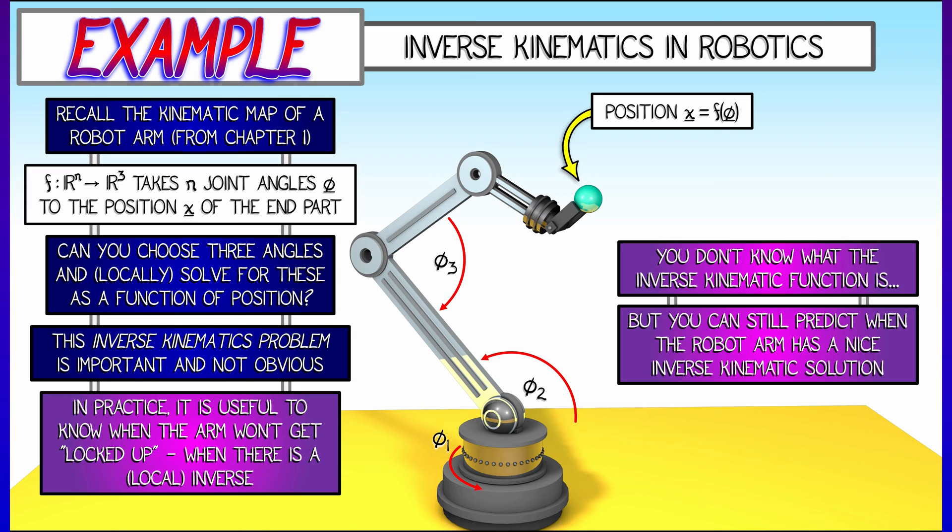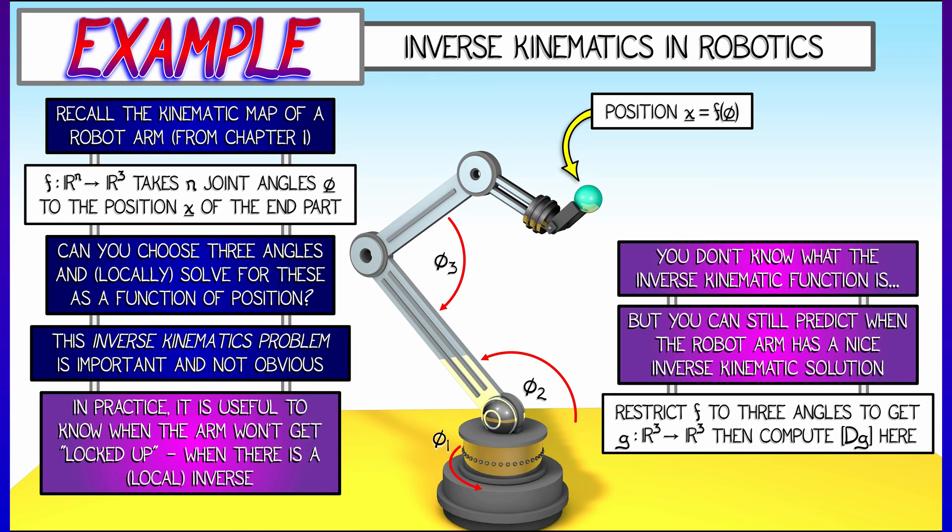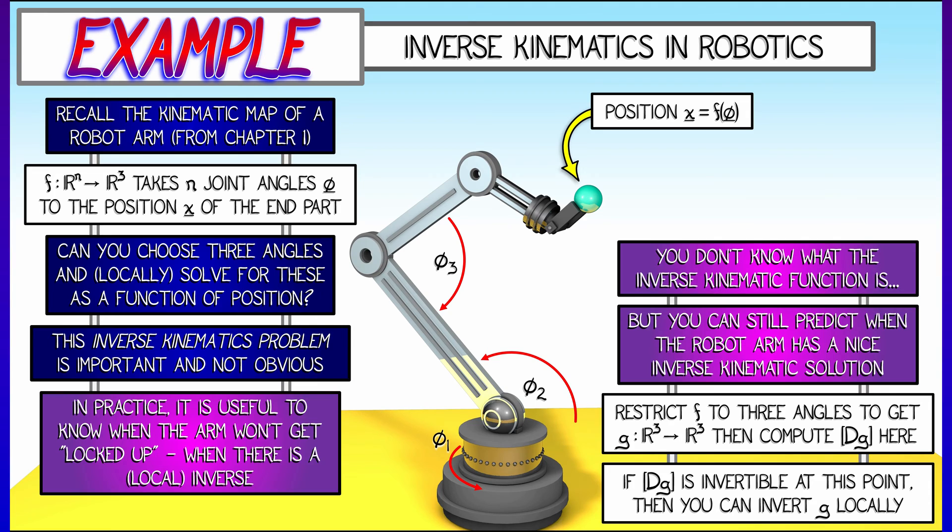Nevertheless, you can predict when it has a nice solution versus when it might get locked up by taking the restricted function, three angles to the three output coordinates, computing the derivative there, and then using the inverse function theorem by just computing the determinant of the derivative. That tells you when you can solve the inverse kinematics problem locally.